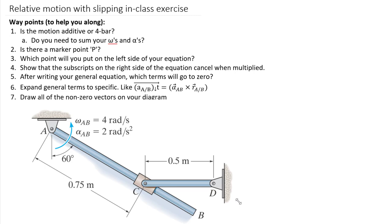Looking at the system we're given, before we start answering questions, we have two fixed axes rotation pins — one at point A and one at point D — which puts both bodies AB and CD in fixed axis rotation around those individual points. So we have constraints coming from both ends, and then we have a collar named collar C that's going to move up and down rod AB as the system moves. We're given some information about alphas and omegas: both the angular velocity omega of AB as well as the angular acceleration alpha of AB are both positive from the right-hand rule.